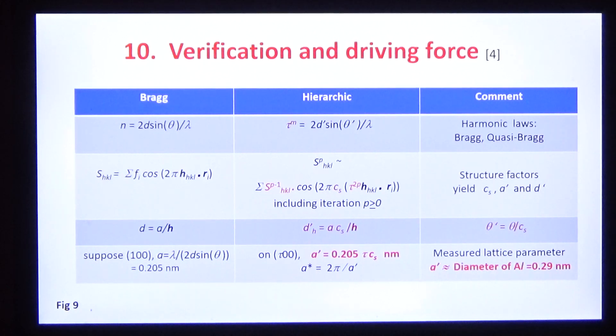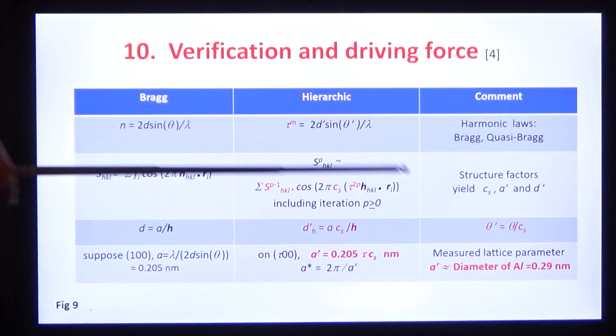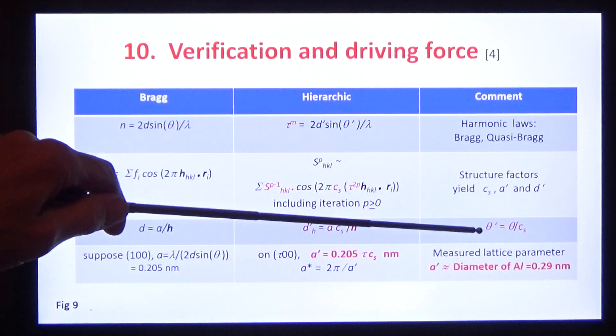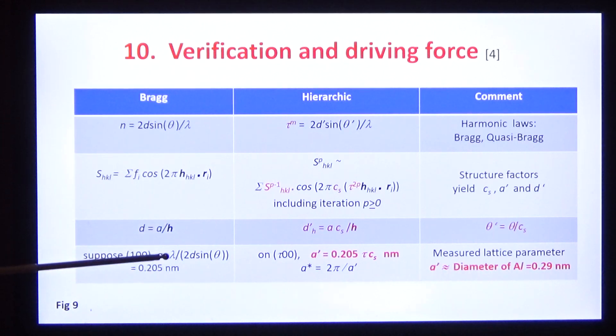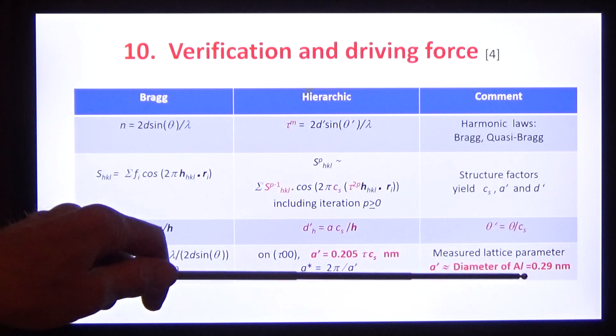I can now begin to sum up. Here's Bragg's law. Here's the quasi-Bragg law, and here's theta prime, the quasi-Bragg angle. Several of us in the early days, 30 years ago, measured the lattice parameter assuming Bragg's law because we didn't have anything better. But now we adjust it for the metric and for the index.